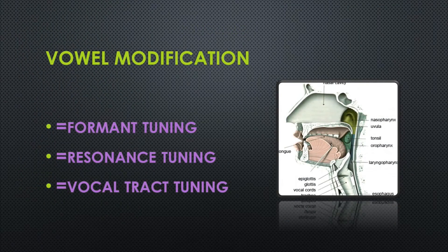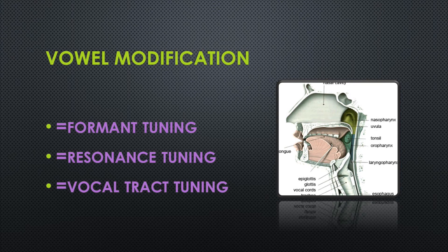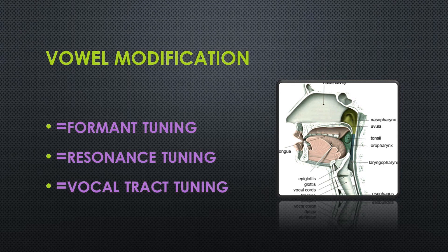The three articulators decide the structures of the first and second formants for each vowel. The three deciding factors for the formants are the location of the tongue, the shape of the lips, and the opening of the jaw. The tongue, lips, and jaw influence vocal tract change and ultimately cause different formant structures. The effort to adjust the formants for ideal chiaroscuro is called formant tuning, which is also called vocal tract tuning. Vowel modification is another name for formant tuning.